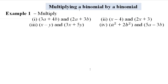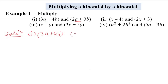Example number one: multiply (3a + 4b) by (2a + 3b). We will write this in product form: (3a + 4b)(2a + 3b). You can use a multiplication sign, but it is not necessary — the brackets indicate the product.